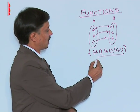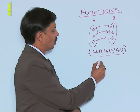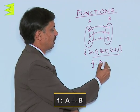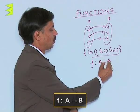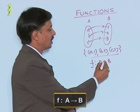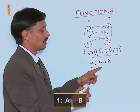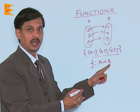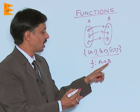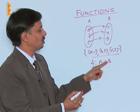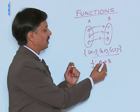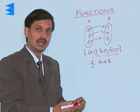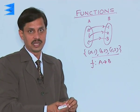Symbolically, if F is a function related from set A to set B, then A is the first set and B is the second non-empty set, and every element of the first set is uniquely associated with some element in the second set.